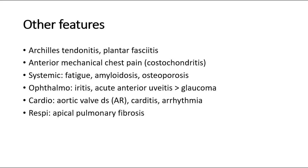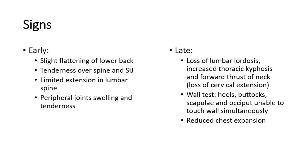Cardiovascular features such as aortic valve disease, especially aortic regurgitation, and also carditis and arrhythmia may occur. For the respiratory system, some patients might have apical pulmonary fibrosis. These are some of the other features that could be associated with ankylosing spondylitis.